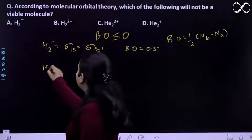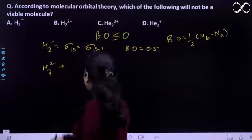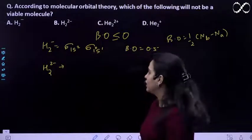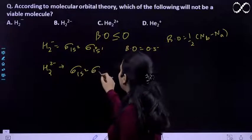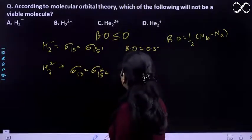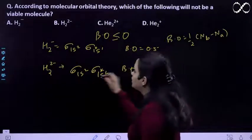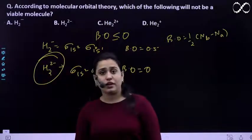If we talk about H2 2 negative ki agar hum baat karein, it is sigma 1s is 2, sigma star 1s is 2. The bond order is 0. So this is not a viable molecule according to MOT.